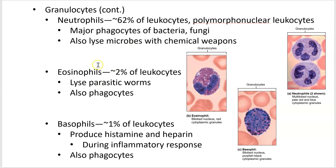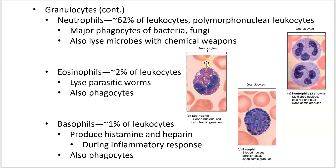Eosinophils are the fifth most common leukocyte overall but the second most common granulocyte. They appear more reddish-purple than neutrophils, are about the same size, and usually have a bilobed nucleus — something important to note for lab.